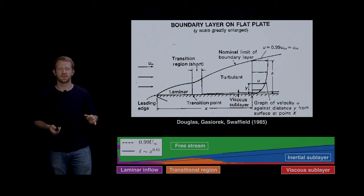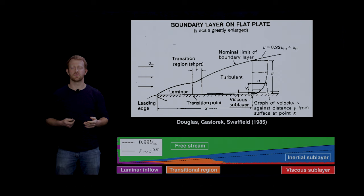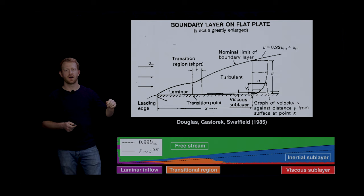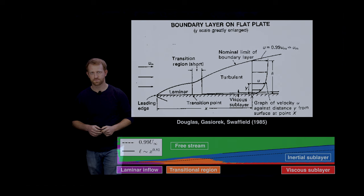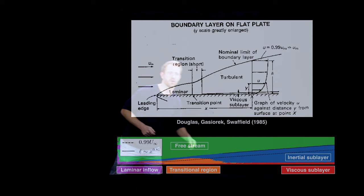We can also check that the segmentation of our domain is consistent with known boundary layer scaling. For instance, the inertial sublayer is known to scale—the width of this thing is known to scale with x to the four fifths. If we just take the post-transitional y coordinate here and fit it to a power law, we get x to the 0.81, which is pretty nice agreement.